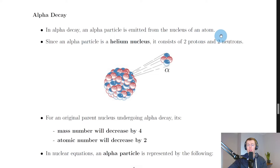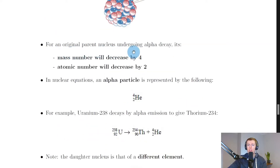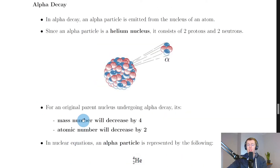Starting with alpha decay: an alpha particle is emitted from the nucleus of an atom. Since an alpha particle is a helium nucleus, it consists of two protons and two neutrons. Imagine this is the nucleus of an atom emitting an alpha particle — the two protons and two neutrons leaving is called alpha decay. For an original parent nucleus undergoing alpha decay, its mass number will decrease by four and its atomic number will decrease by two.